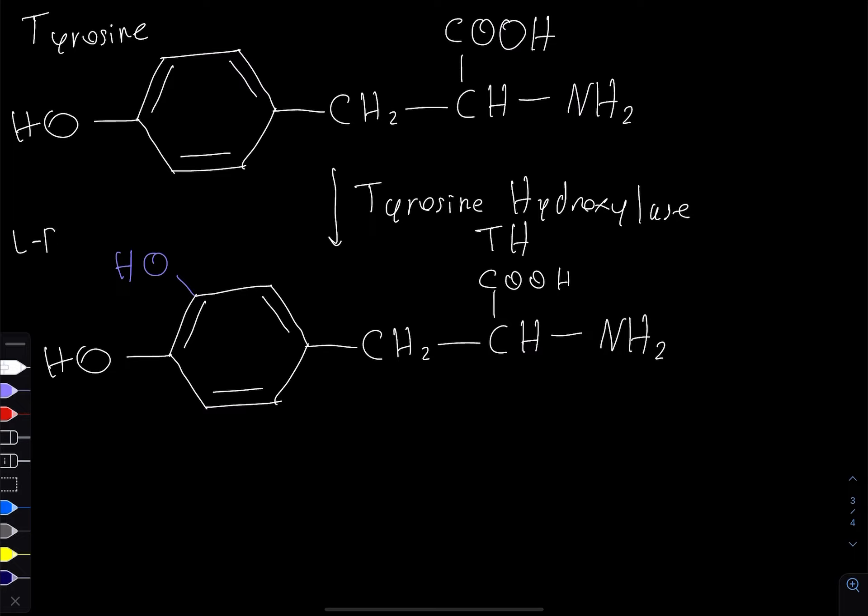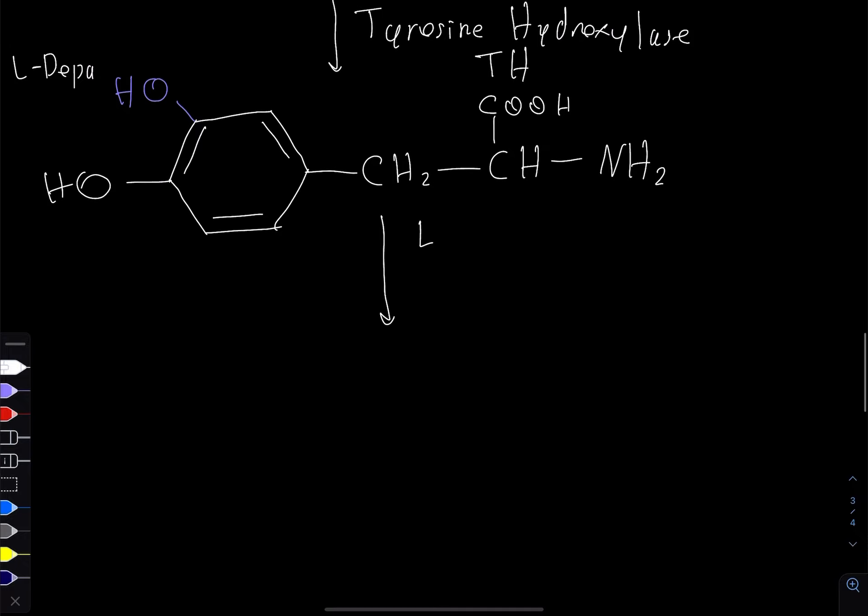Then we're going to have another enzyme called aromatic L-amino acid decarboxylase, also known as DOPA decarboxylase or just AAD. This is going to turn L-DOPA into dopamine, and the way it does that is by copying this molecule.